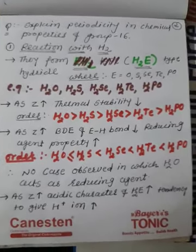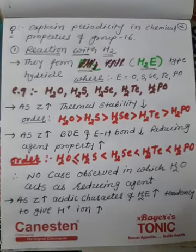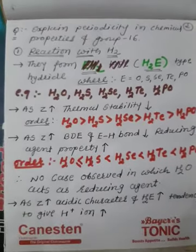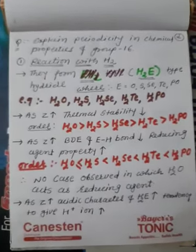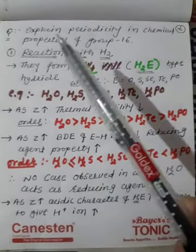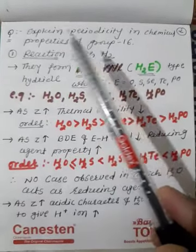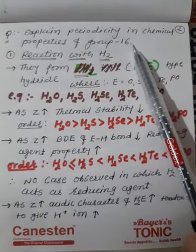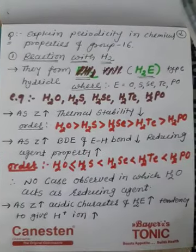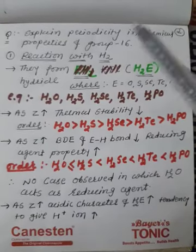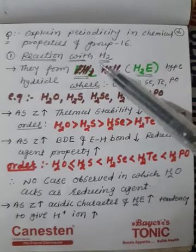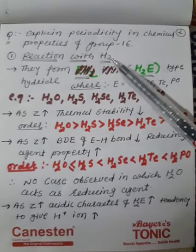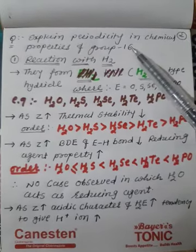Hello, my dear students, how are you all? Let us discuss the next question in p-block elements — the periodicity of chemical properties of group number 16. We will discuss reaction with hydrogen, reaction with oxygen, and reaction with halogens.